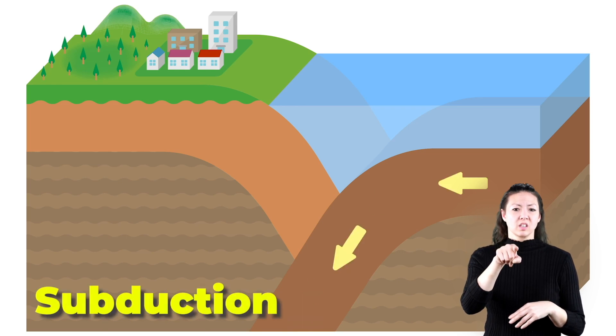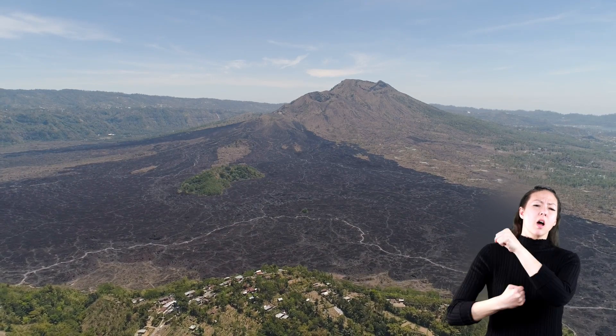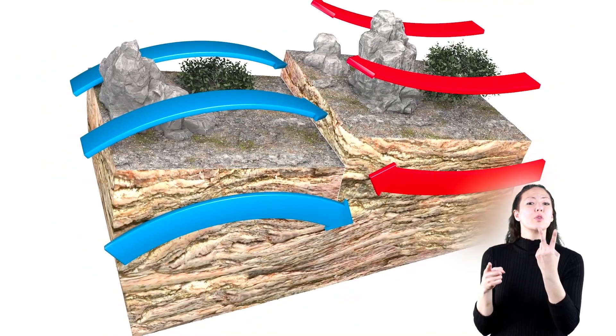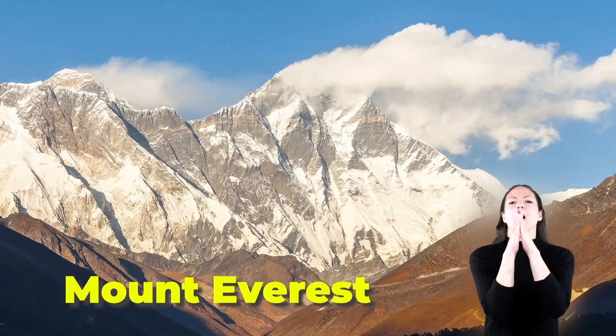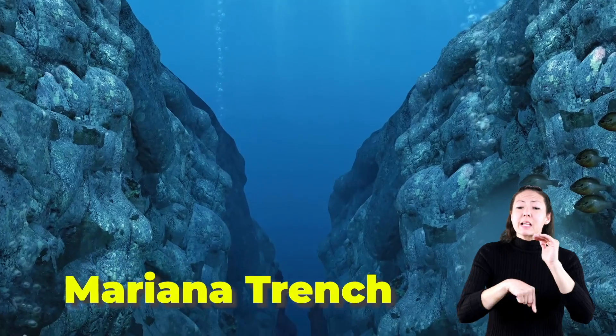When that happens, it forms mountains and volcanoes over a long period of time. Earthquakes can also happen where these two land masses meet. Examples of convergent boundaries are Mount Everest and the Mariana Trench, which is deep in the ocean.